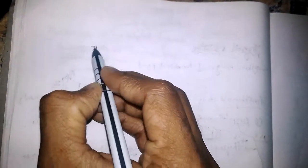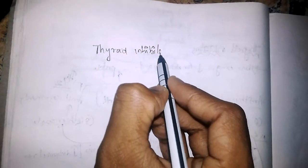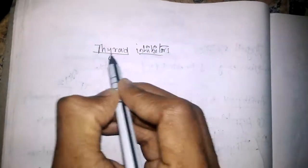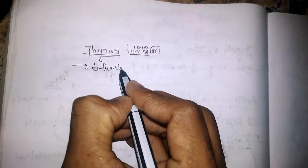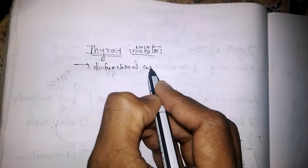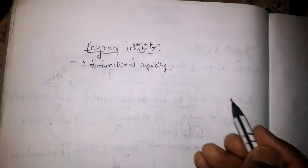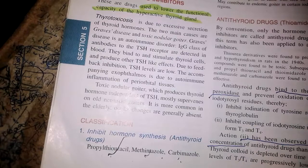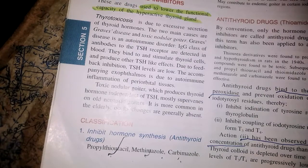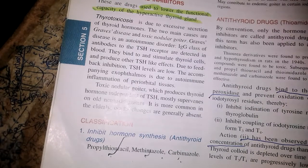Let us discuss about thyroid inhibitors. These drugs reduce the functional capacity of a hyperactive thyroid gland. The classification includes four classes of drugs. The first class is those drugs that inhibit hormone synthesis, also called antithyroid drugs.